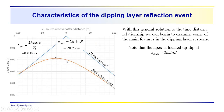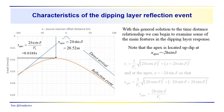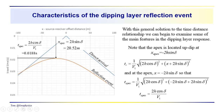Looking at a particular reflection hyperbola, the apex is located at a distance of 2H sine delta. If we know H and delta, we can easily calculate the apex time. In this example, the apex distance is 20.52 meters, and the arrival time at the apex is 0.0188 seconds. Our x-apex is located at minus 2H times the sine of delta, and T-apex in this case equals 0.0188 seconds.